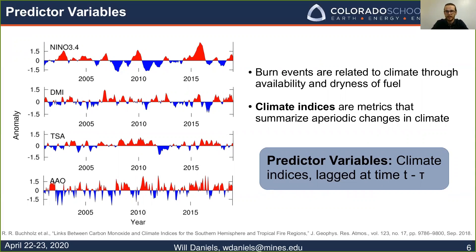These climate indices are our predictive variables, but we've lagged them at time t minus tau. We do that because we're interested in prediction — if we have climate index data right now, we want to know what the carbon monoxide is going to look like at a later time t plus tau.